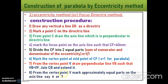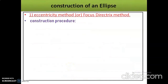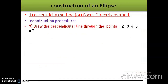Step 6 — mark the vertex point V at the midpoint of CF, because eccentricity = 1. Step 7 — from vertex point V, draw perpendicular line VB such that VB = VF. Join C and B and extend it. Step 8 — from vertex point V, mark approximately equal parts (say 6 or 7) on the axis line, named 1, 2, 3, 4, 5, 6.